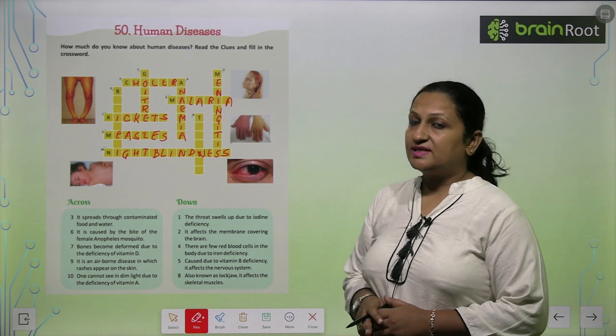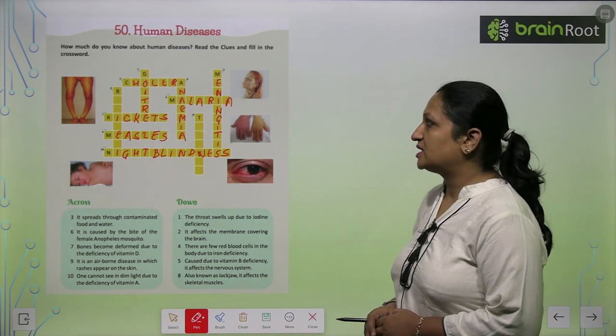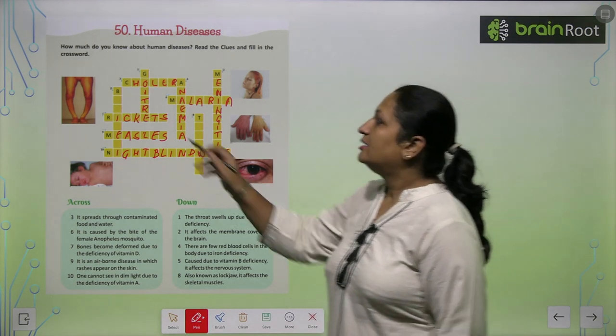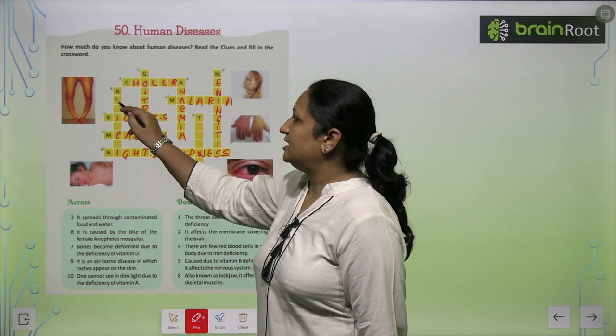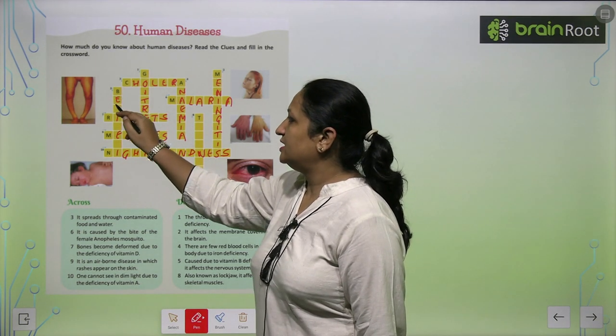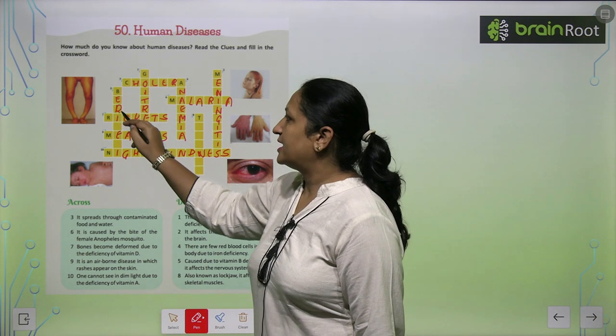Caused due to Vitamin B deficiency, it affects the nervous system. If there is a deficiency of Vitamin B in the body, the disease that occurs is called Beriberi — B-E-R-I-B-E-R-I, Beriberi.